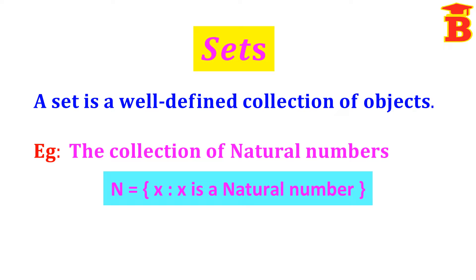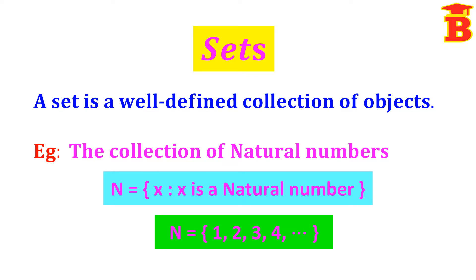The same set can also be written by listing the numbers, called roster form: N = {1, 2, 3, 4, ...}.